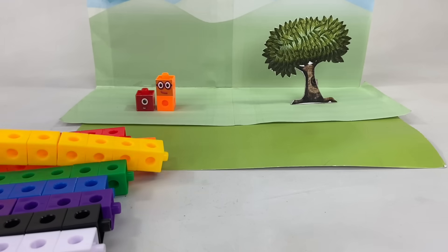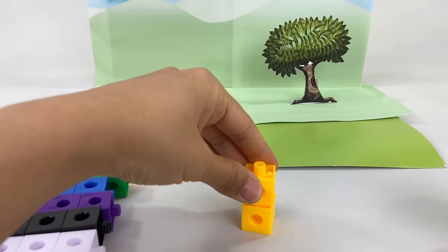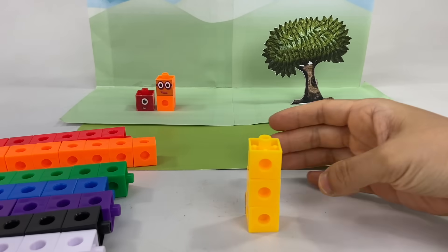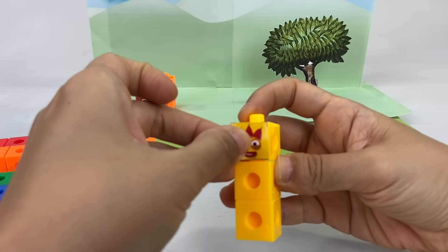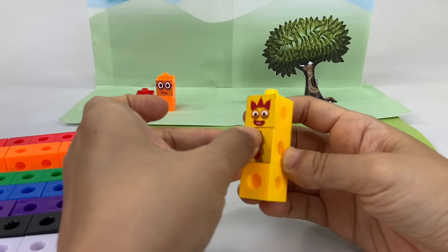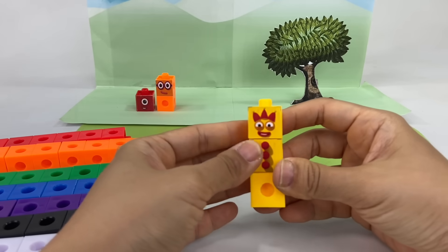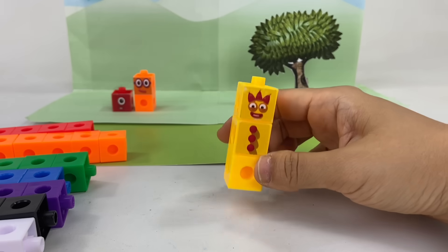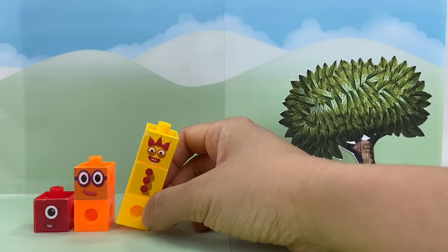Now Numberblocks 1 and 2 need someone to entertain them. So let's make the next Numberblock in Numberland. Numberblock 3! She's made up of three yellow blocks and she wears a red three-pointed crown. She also comes with three juggling balls on her chest, which she loves to use to entertain her friends and make them laugh. Three! I am three! Everybody look at me! No one's bigger than me!